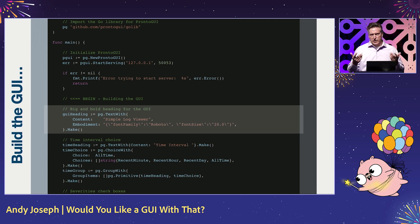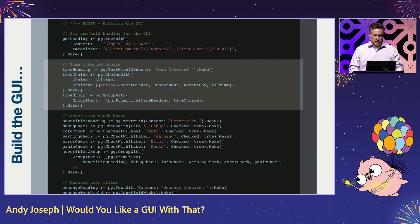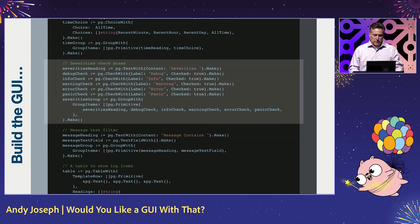This is very common with other kinds of environments such as ReactJS. Then we go on to create the time interval choice with the heading and group that together. Then we create our checkboxes for the severity levels and group those together.